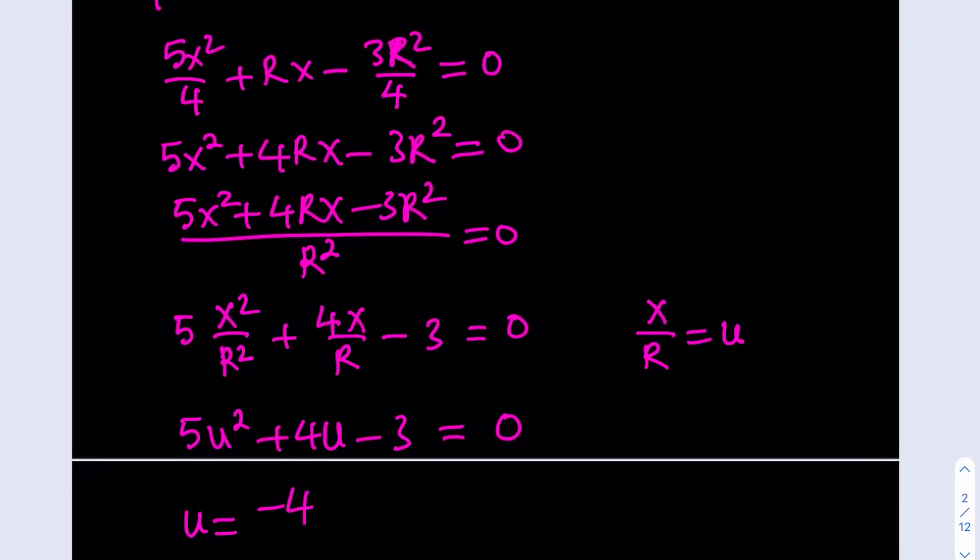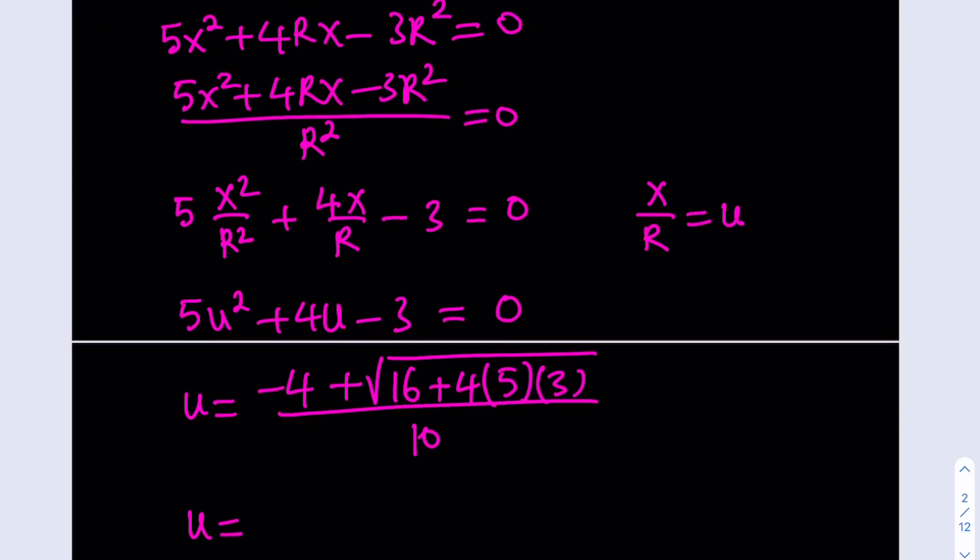So u equals negative b plus the square root of b squared which is 16 minus 4 times a times negative 3. That's going to turn it into a positive. All over 2a which is 10. Let's simplify this and find the value of u.